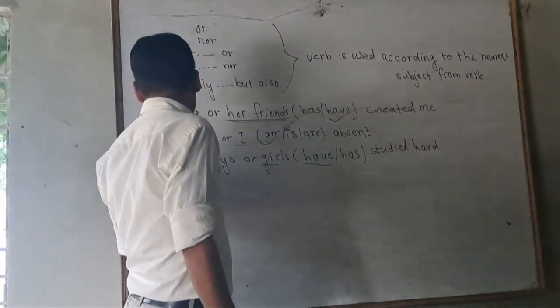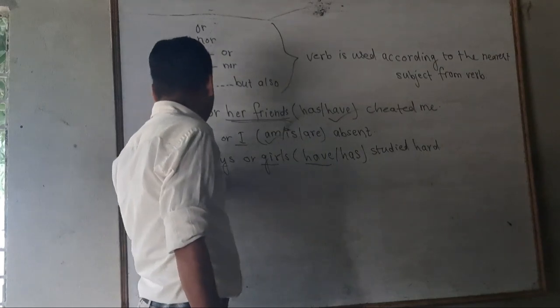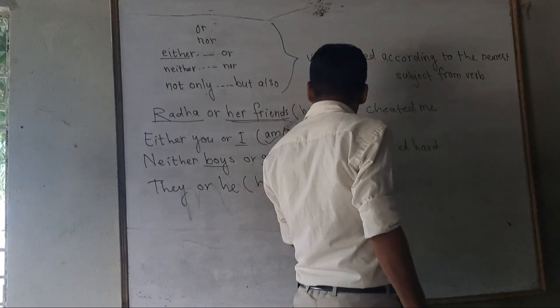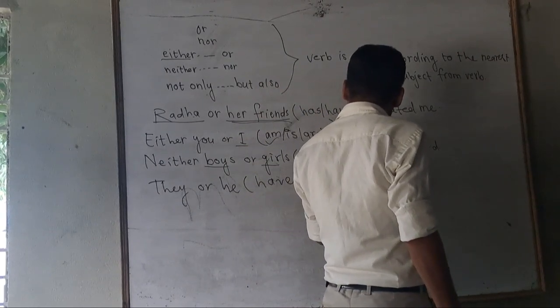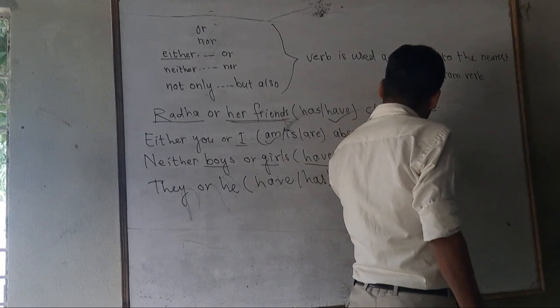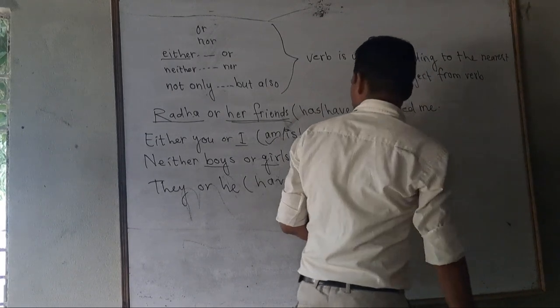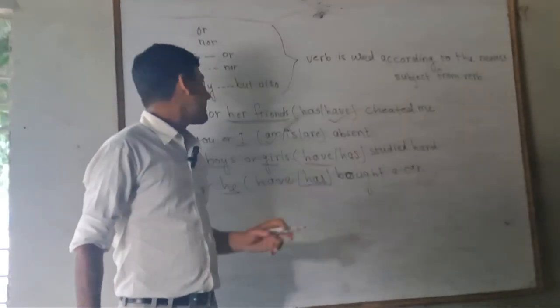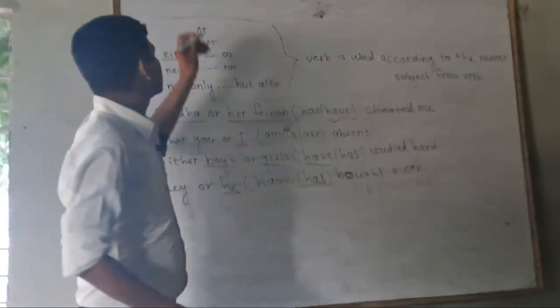They or he have, has, has about, occur. They or he, he, singular, has. How answer?